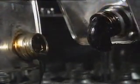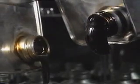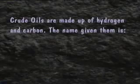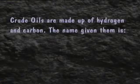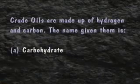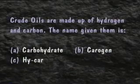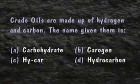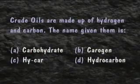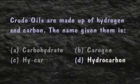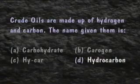So why the difference? Well, it stands to reason. Oils come from so many different creatures mixed together in different proportions, that oil formed in one place is bound to be different from oil formed somewhere else. But no matter what they look like, crude oils are made up of hydrogen and carbon. So guess what they're called? A. Carbohydrate. B. Carrogen. C. Hycarp. D. Hydrocarbon. The correct name for chemical compounds containing hydrogen and carbon is hydrocarbon.